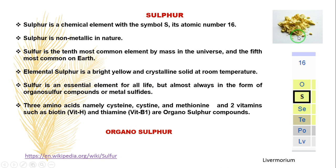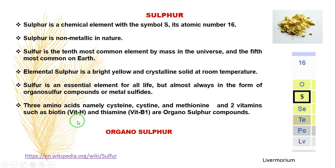Sulfur is generally present in three amino acids: cysteine and methionine. It is also present in two vitamins — biotin, which is also called vitamin H, and thiamine, called vitamin B1 — which are all organosulphur compounds.